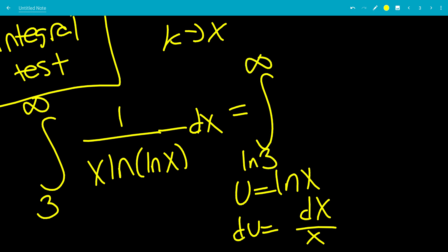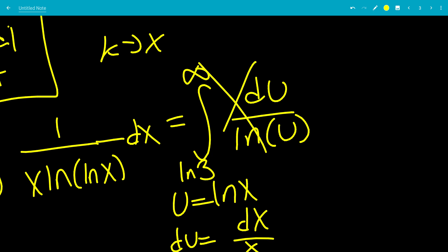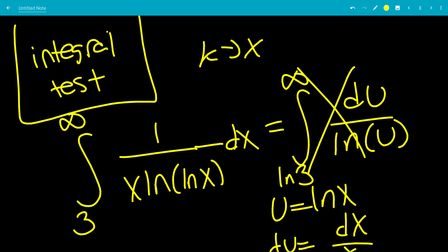dx over x, we said it was du, all over ln of ln x, which is u. But unfortunately, we can't integrate this because we don't know how. So let's try to do this again, but a different way.